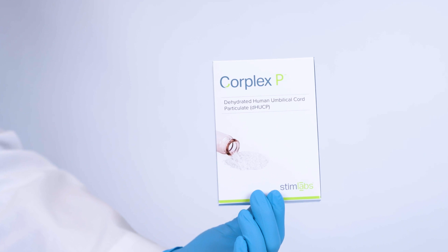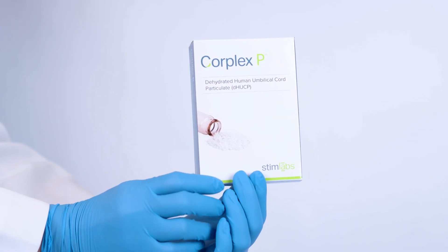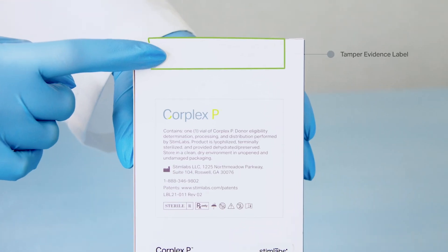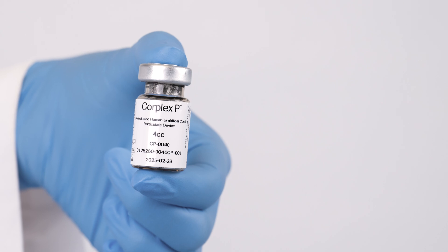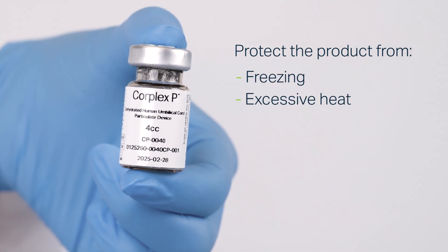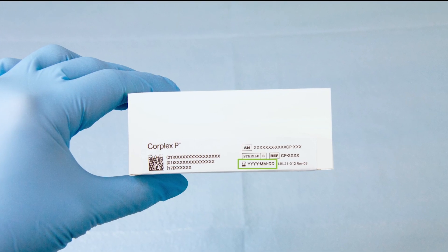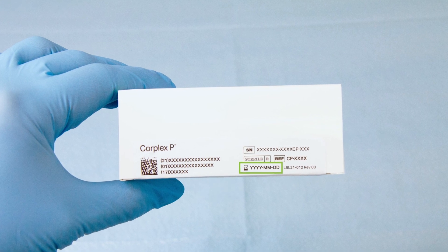Store CorPlex-P in a clean, dry environment at room temperature in the unopened and undamaged package. Protect the product from freezing, excessive heat, and high humidity. CorPlex-P's expiration date is reflected on the product label.